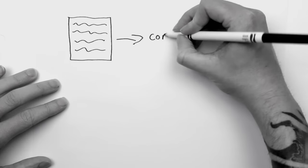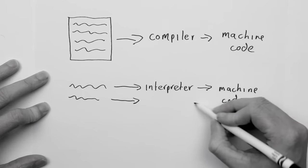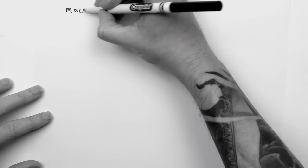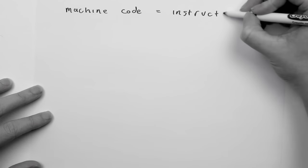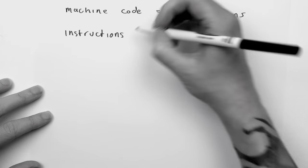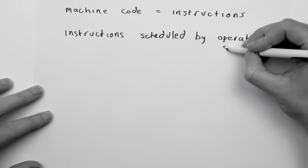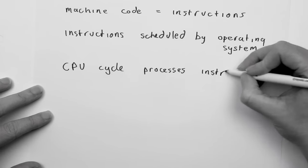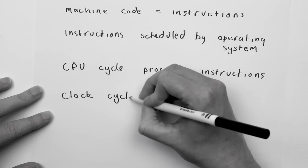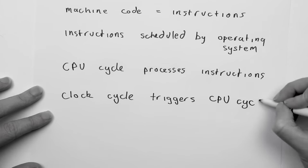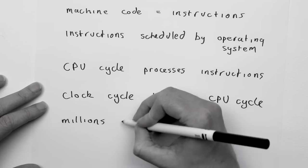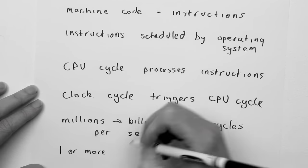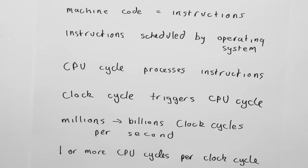In this episode we covered what source code is and how it is translated by a compiler or interpreter into machine code. Machine code is a series of instructions scheduled by your operating system and fetched by the CPU during a CPU cycle. The CPU cycle fetches, decodes, and processes instructions, placing the result back into memory. CPU cycles are triggered by clock cycles — millions or billions of clock cycles happen per second depending on the speed of your computer, and one or more CPU cycles happen per clock cycle.